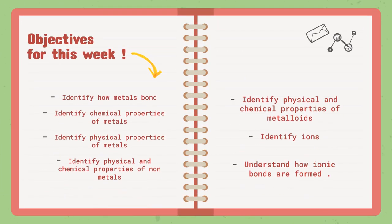As for the objectives for this week, for the first lesson, which is bonding and the periodic table, the objectives are that we are going to identify how metals bond. We started last week with what valence electrons are and how we interpret them from the periodic table. So we're going to start with the metals group and see how valence electrons affect the way they bond.